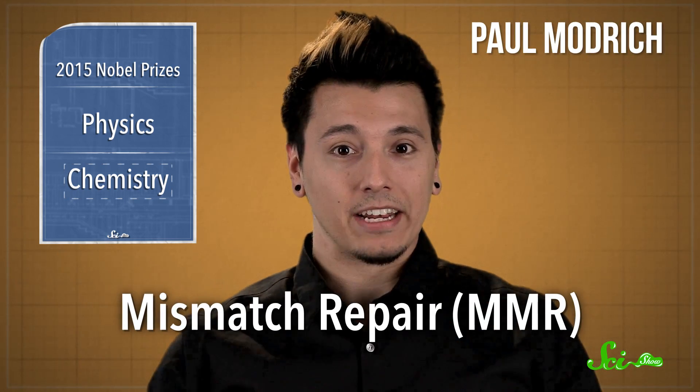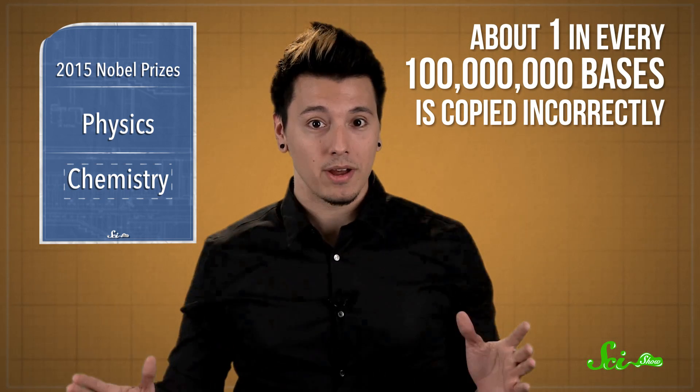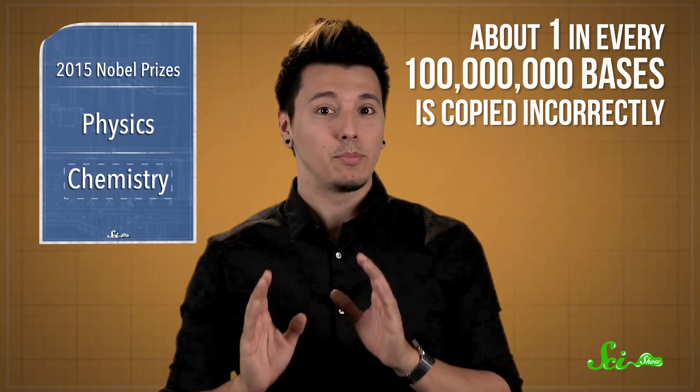The third winner, Paul Modrich, discovered mismatch repair in 1989, which is exactly what it sounds like. It repairs mismatched bases introduced to a strand of DNA during cell division. DNA proofreading during cell division is very good, but it's not perfect. About one in every hundred million bases is copied incorrectly. And MMR fixes 99.9% of those.